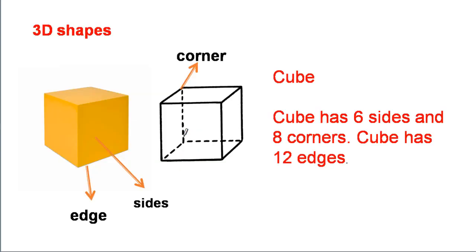Now, these are three-dimensional shapes. Cube. Cube has six sides and eight corners. The sides of the cube are its faces. One, two, three, four, five, six — these are the sides of a cube. And the corners: one, two, three, four, five, six, seven, eight. Cube also has twelve edges.